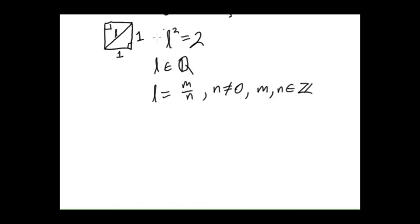Now since L squared is 2, that means that m squared over n squared is 2, because L is m over n, so we just square it, we should get 2. Now I forgot another assumption on m and n.